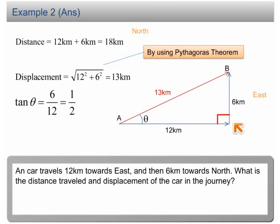Tangent theta is equal to 6 over 12, which is then equal to 1 over 2. Therefore, theta is equal to arc tangent 1 over 2, which is equal to 26.6 degrees.